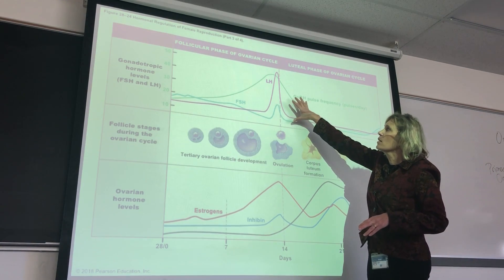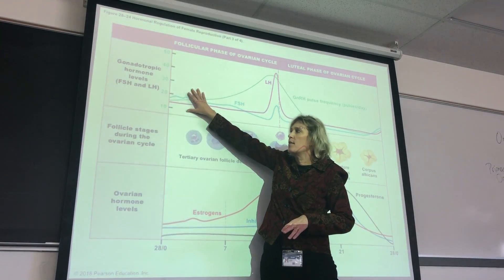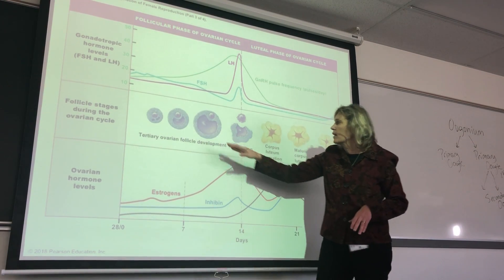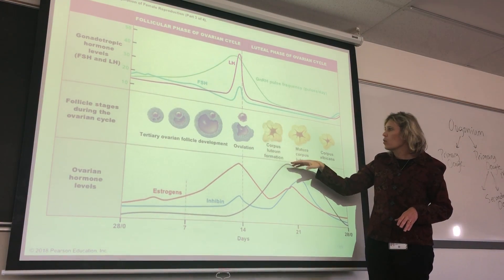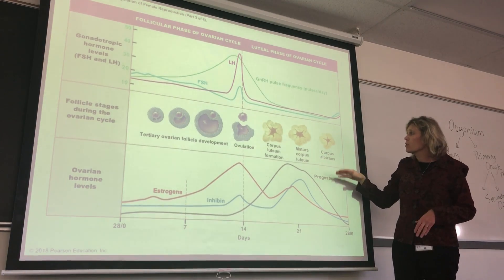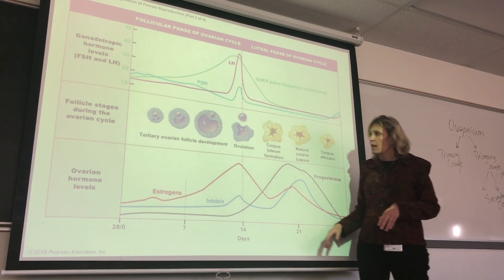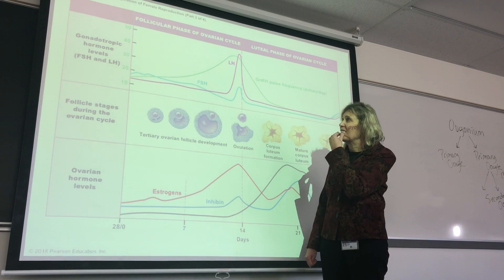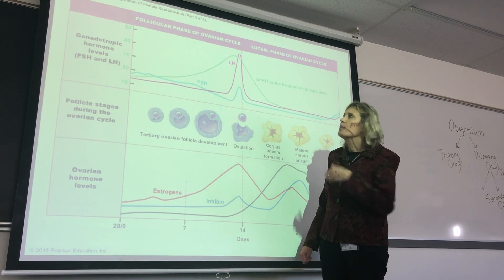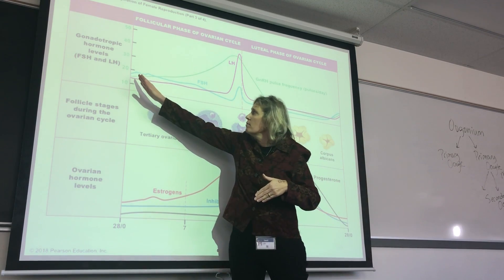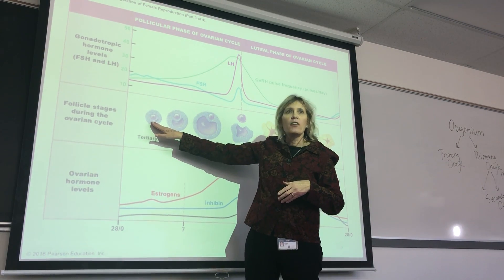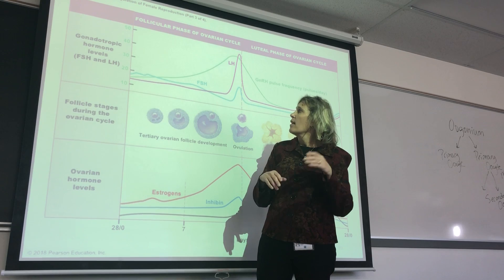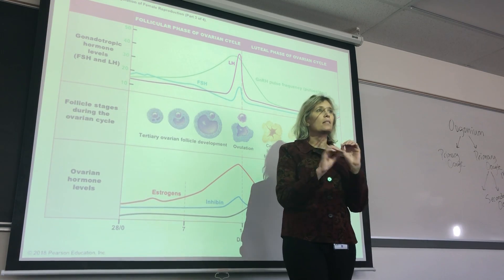Here's the gonadotropic releasing hormone and the levels of that. This shows the follicle developing from primordial to primary to secondary to tertiary, then ovulation, then into a corpus luteum, then a mature corpus luteum, and then into a corpus albicans. Down here are the ovarian hormone levels. On day one, we start out with a primordial follicle that has a primary oocyte, and the hypothalamus is pulsing kind of low.